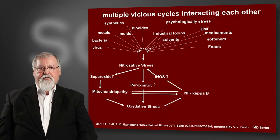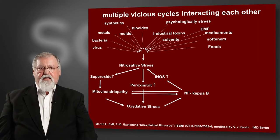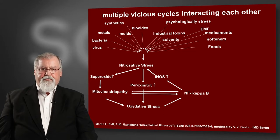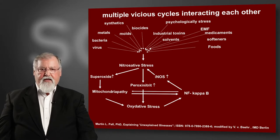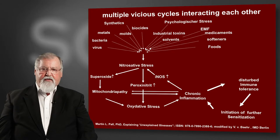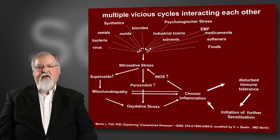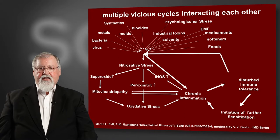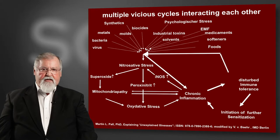If a very large amount of calcium enters the cell, nitrative stress and oxidative stress occur. By superoxide and peroxynitrite, this leads to NF-kB activation, which leads again to chronic inflammation, immune system tolerance loss, and initiation of further sensitization — giving a feedback to the calcium input and going back to the NO-NO cycle again.